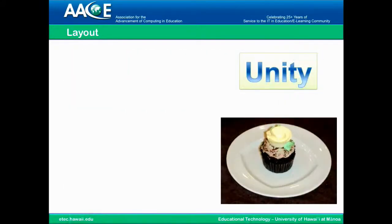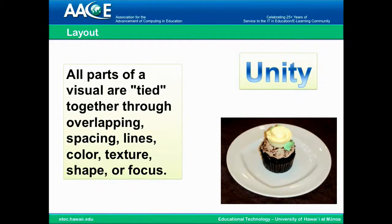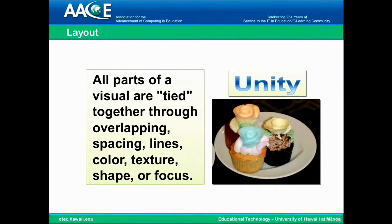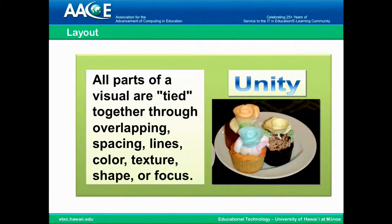Unity is a concept most people haven't heard of. It means all the parts of a visual are tied together through overlapping, spacing, lines, color, texture, shape, or focus. In this slide, you see we have three objects: the word box on the left, the cupcake, and the title on the right. Right now it's like you have three pictures. So if we squeeze those together, we have more unity. But even more, if we add a green background, we tie them together in a way that makes them into a single picture.